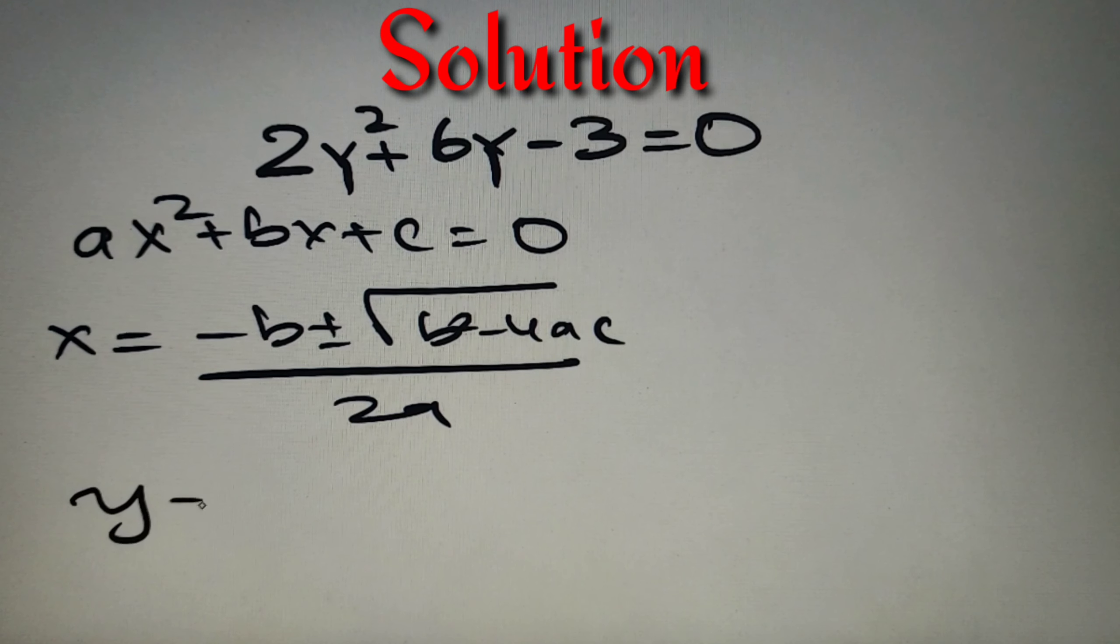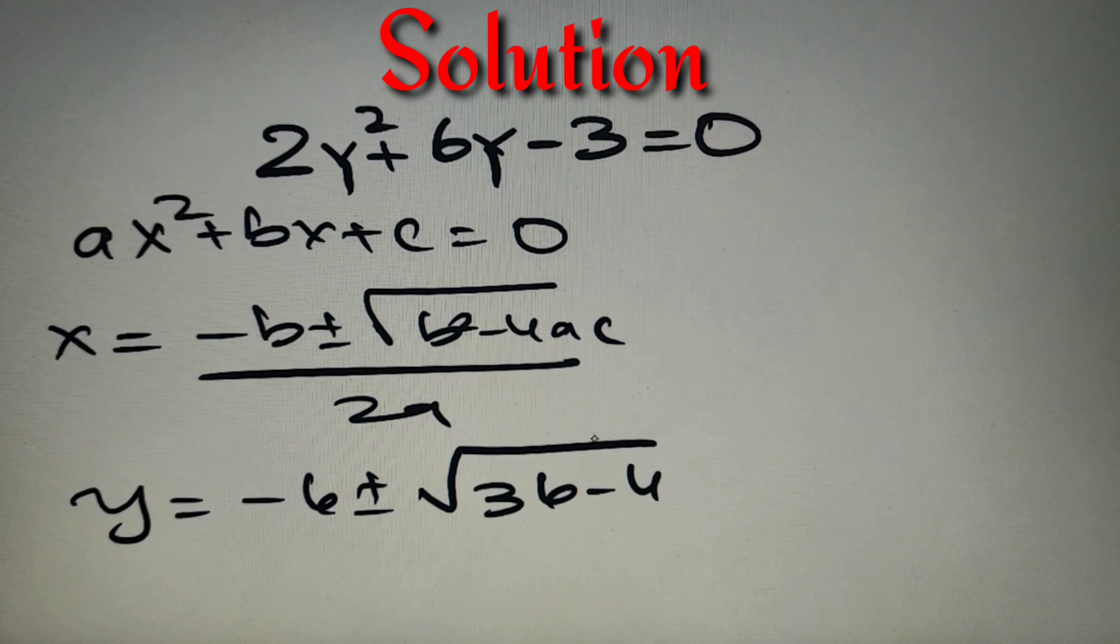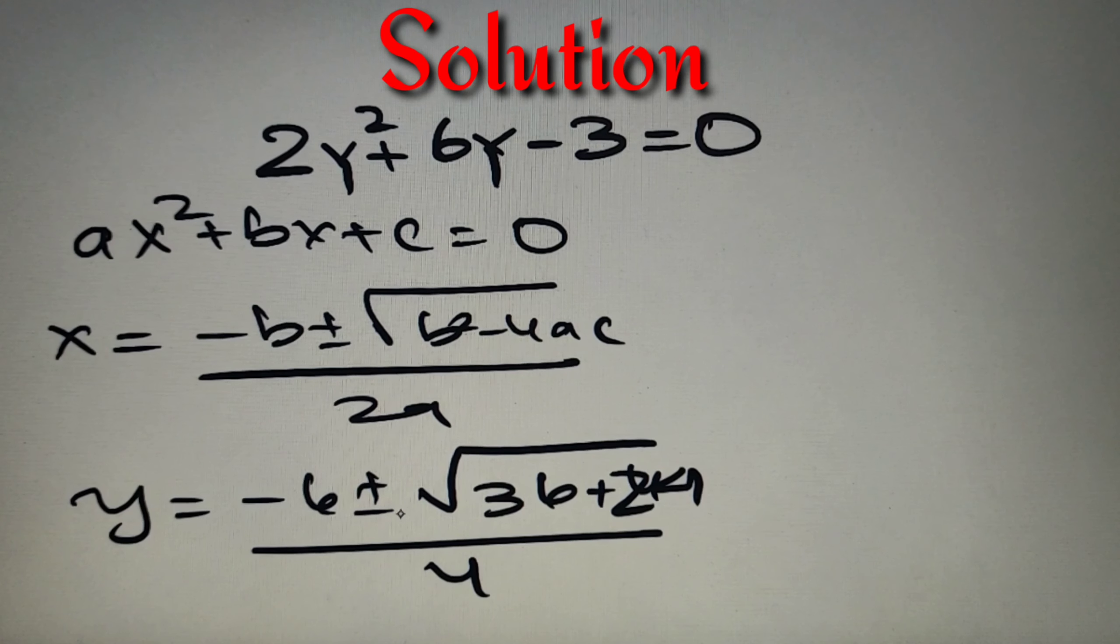Now we have to find the value of y and we just have to put the respective values of a, b, c in it. So we have got the value of y as minus 6 plus minus under root of 36 minus 4 into 2 into minus 3. So that is equal to minus 24 but we have got already a minus sign, so this has become plus 24. So we have got 36 plus 24 whole divided by 2 into 2 that is equal to 4.